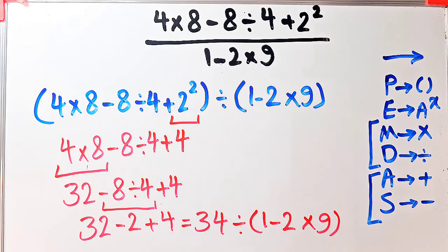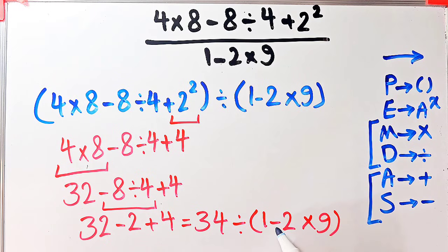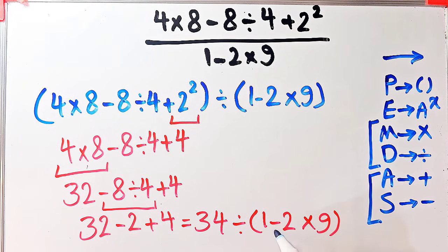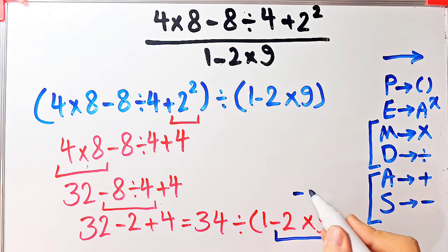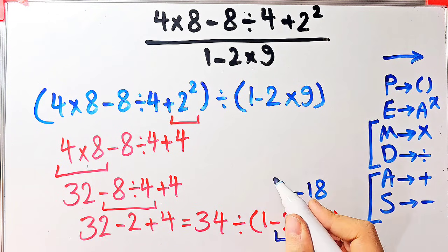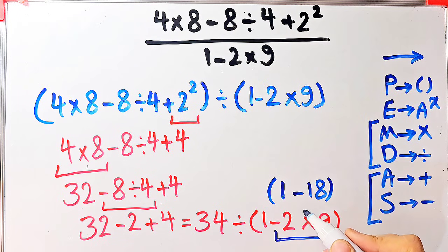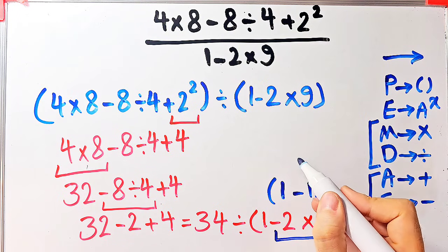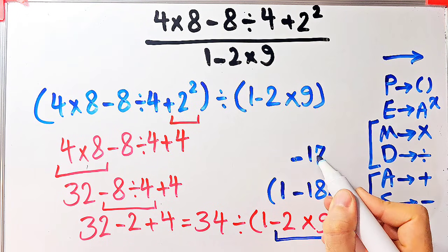In this step we simplify the parentheses again. Inside these parentheses we have subtraction and multiplication. First we simplify the multiplication because multiplication has higher priority than subtraction: negative 2 times 9 equals negative 18. Now we have 1 minus 18, and 1 minus 18 equals negative 17.